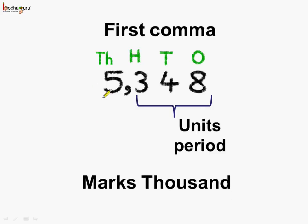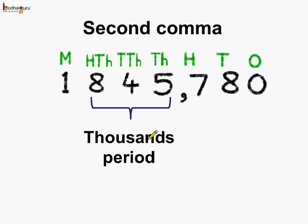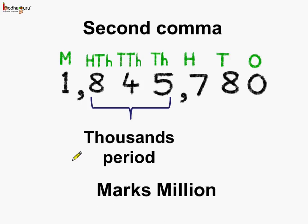Like here we have five thousands. The first comma is after the hundreds place and marks the thousands. The second period consists of thousands place, ten thousands place, and hundred thousands place — all three places to the left of hundreds place form the thousands period. The second comma comes after this period and marks the millions. Here we have 1,000,000 and 845,000 and 780. So remember, the second comma marks the millions.